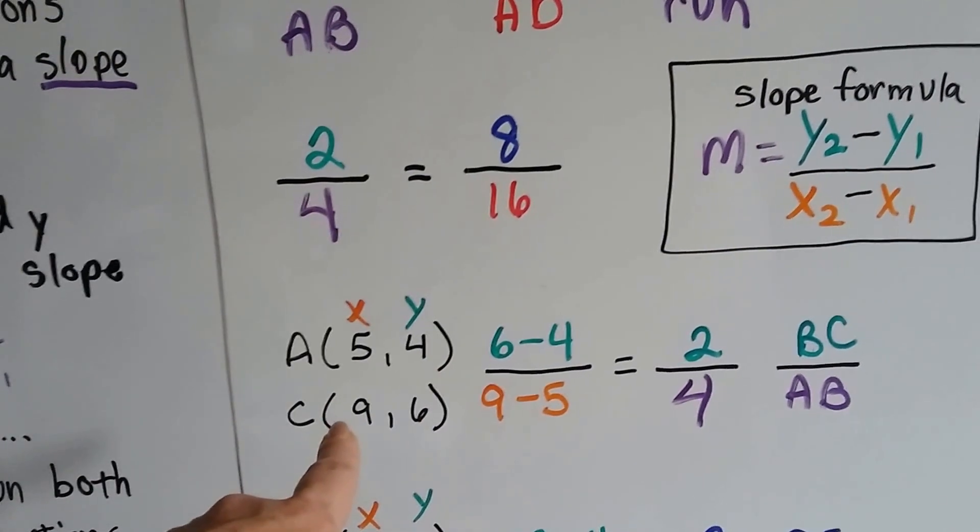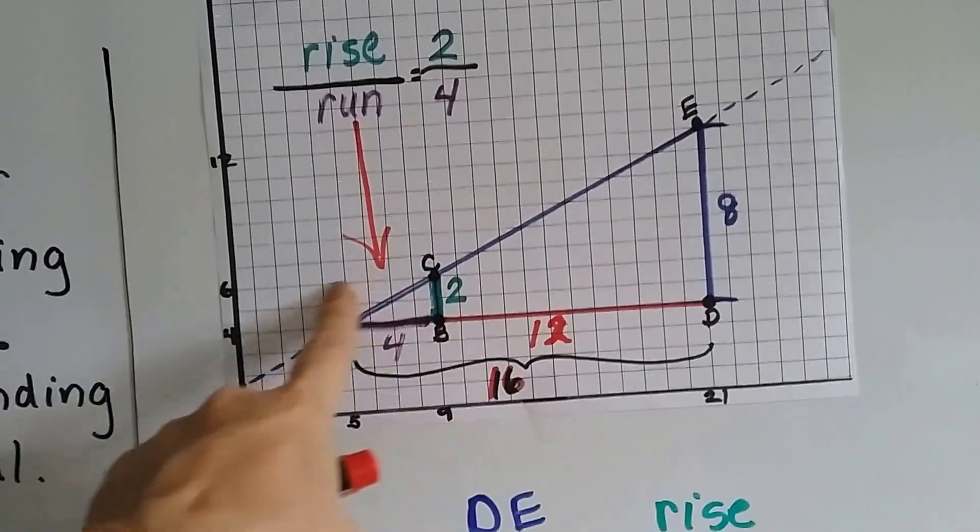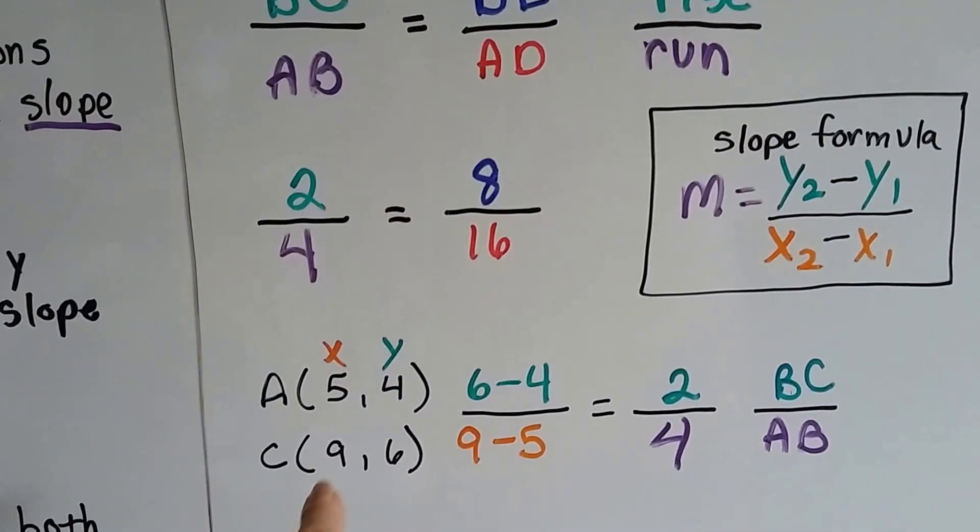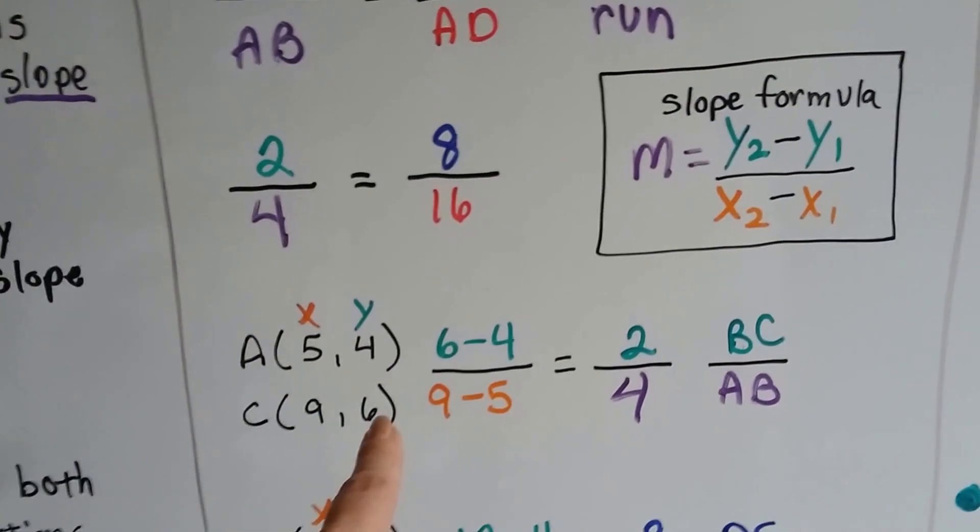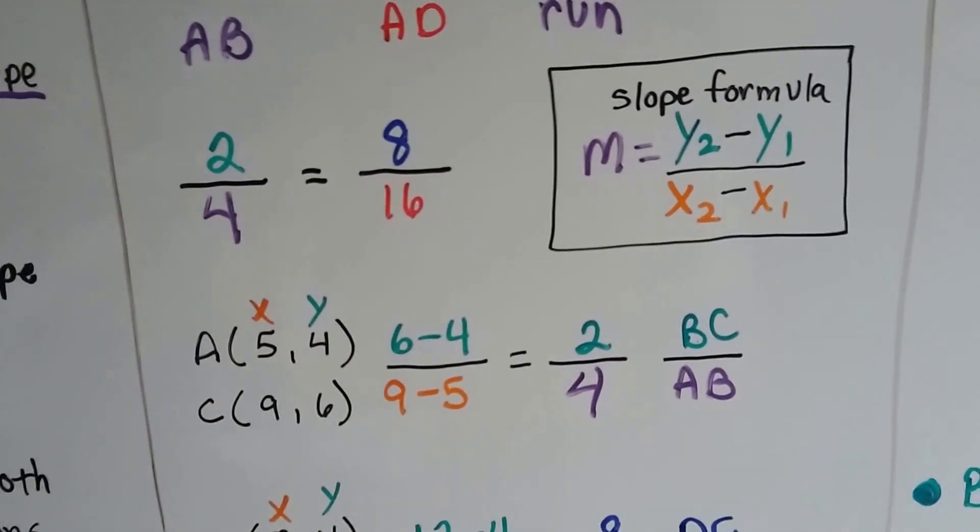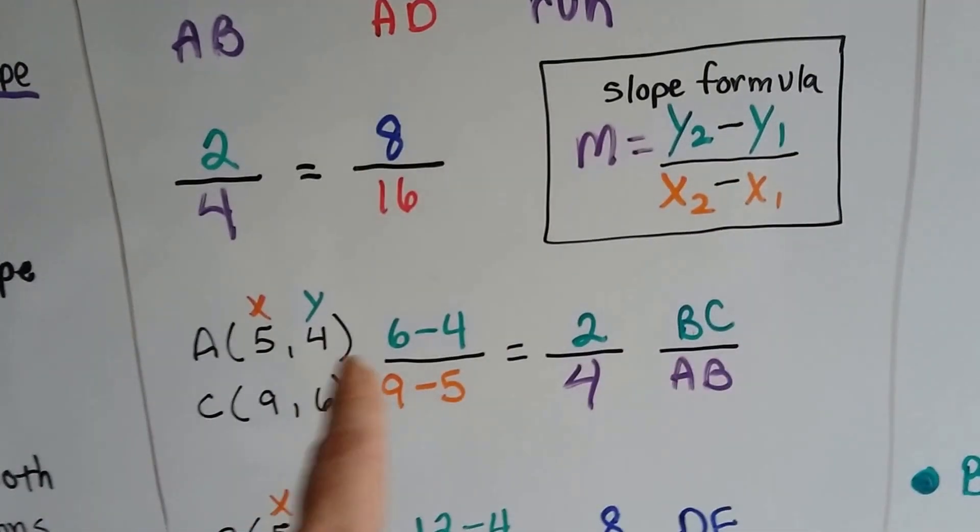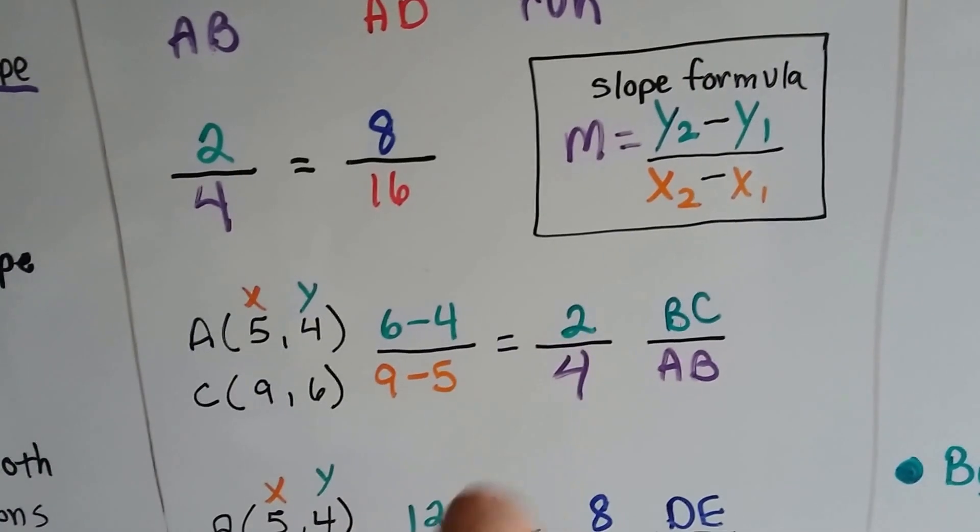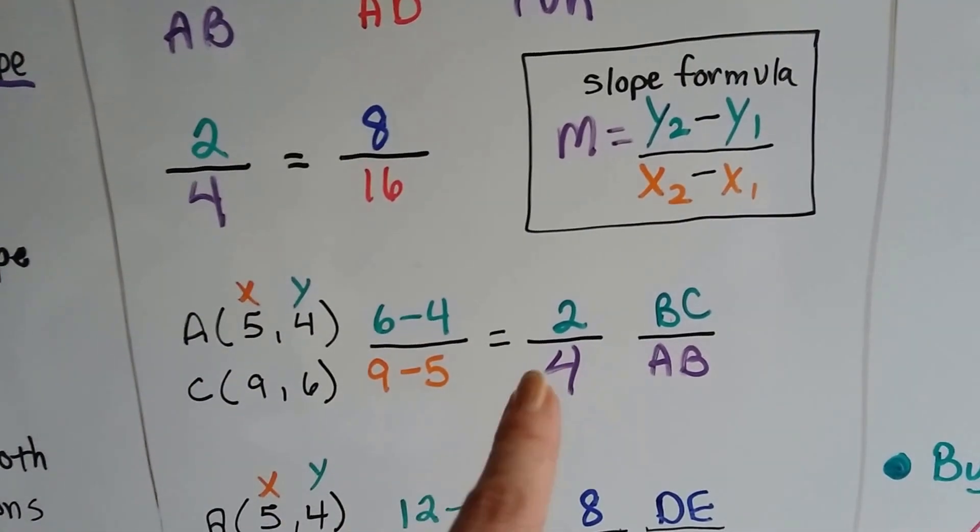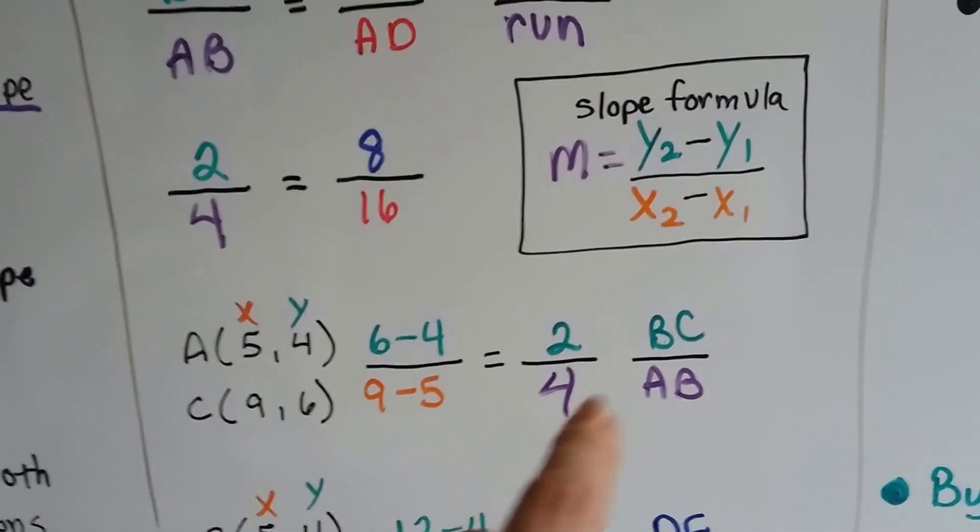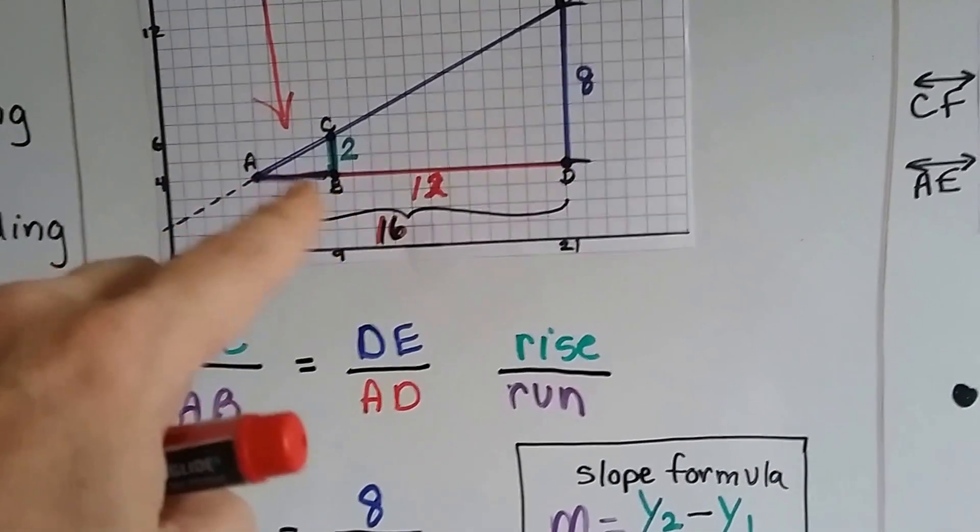For the x, it's 5, and the y, it's 4. We take point C. Point C is right here. That's 9 for the x, and 6 for the y. Here's the y coordinates, and here's the x coordinates. This is y2, and that's y1. This is x2, and that's x1. So we're going to subtract. We're going to have y2, the 6, take away y1, the 4. 6 take away 4 is 2. Then we've got 9 take away 5, which is 4. So look, we've got 2 over 4, just like this was. That's BC over AB.